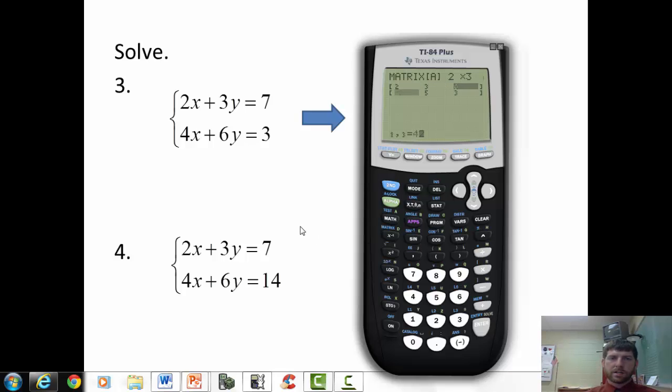Everything was already lined up, so I didn't have to do that step. Type them in. One, two, three, seven, four, six, three. Second quit. Second matrix math.